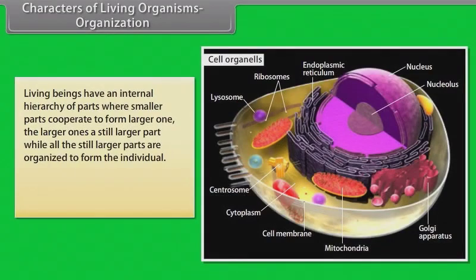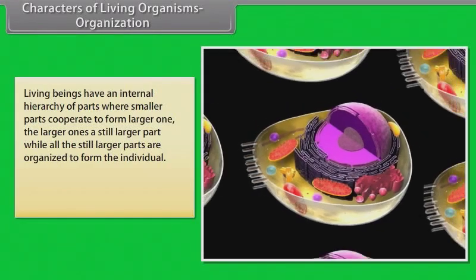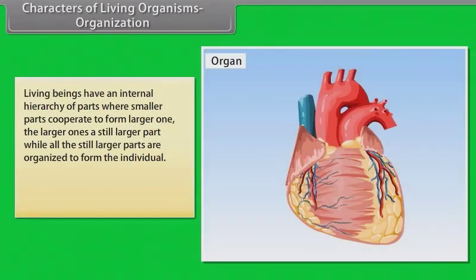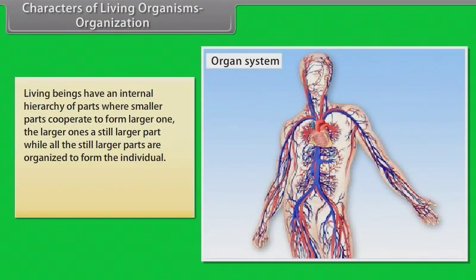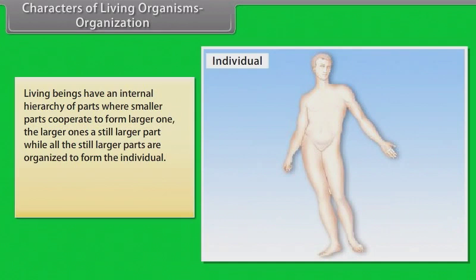Living beings have an internal hierarchy of parts where smaller parts cooperate to form larger ones. The larger ones are still larger parts while all the parts are organized to form the individual. Because of this organization, living beings are also called organisms.